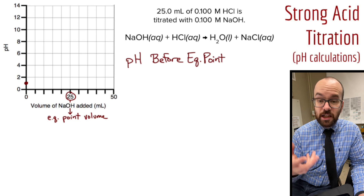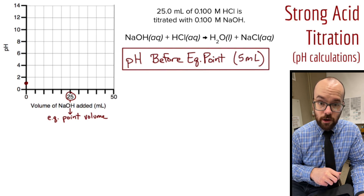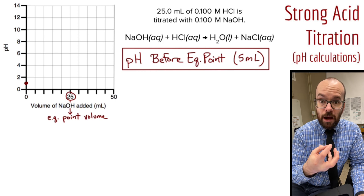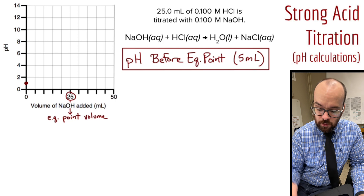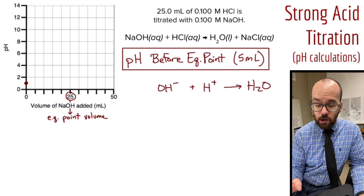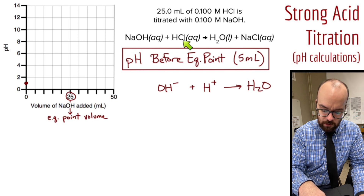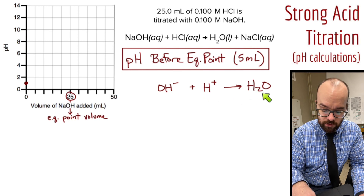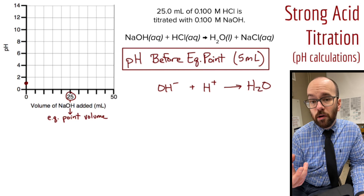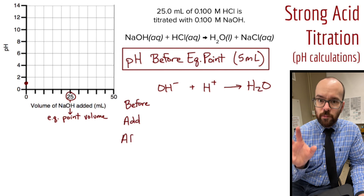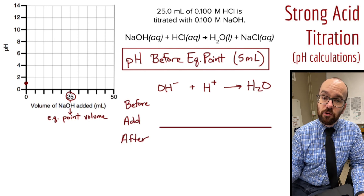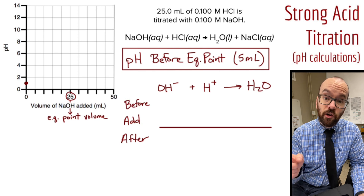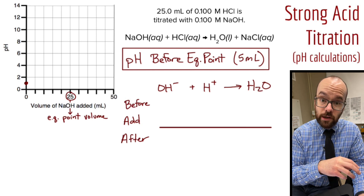Now let's find the pH after we've added 5 milliliters of base — another data point on our graph. The base is neutralizing some of the acid but not all of it, so I need to figure out how much acid is left. I'll rewrite the equation removing spectators — sodium and chloride are spectators — so really it's hydroxide reacting with H⁺ to produce water. I'm going to create a before-add-after table: 'before' is what we start with, 'add' is the base added, and 'after' analyzes what's left after neutralization. This is a stoichiometry calculation, so everything must be converted into moles.